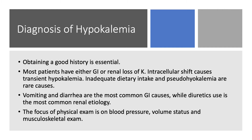Vomiting and diarrhea are the most common GI causes. Also laxative abuse, induced vomiting, bulimia, and anorexia nervosa. Wild diuretics are the most common renal etiology. Think of it like a triangle with hypokalemia in the middle: vomiting, diarrhea, diuretics — call it VDD. These are the three common causes. Add hypomagnesemia if low potassium is recalcitrant.